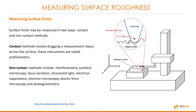Surface finish may be measured in two ways: contact and non-contact methods. Contact methods involve dragging a measurement stylus across the surface — these instruments are called profilometers. Non-contact methods include interferometry, confocal microscopy, focus variation, structured light, electrical capacitance, electron microscopy, atomic force microscopy, and photogrammetry.